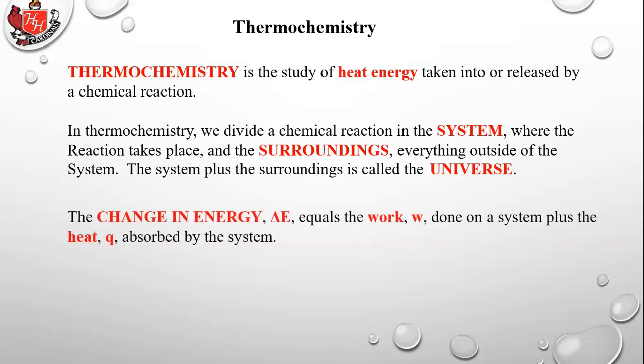The change in energy, symbolized by delta E — where the Greek letter delta means change — equals the work done on a system plus the heat absorbed by the system: delta E = q + w. If you put heat and work into the system, it's a positive change in energy because you have more energy in the system. If heat and work are coming out of the system, it would be a negative delta E.